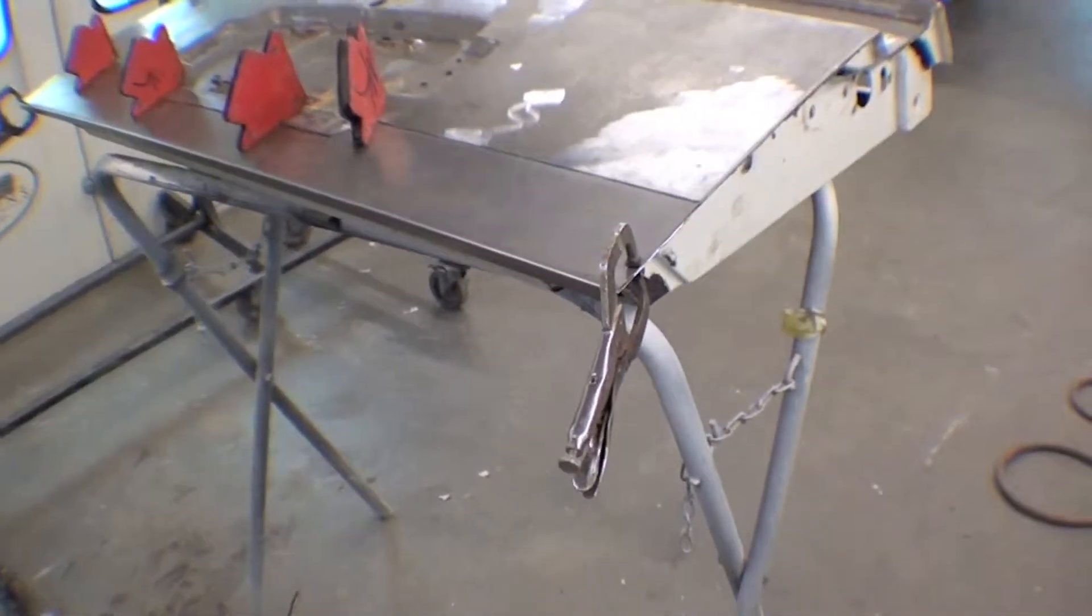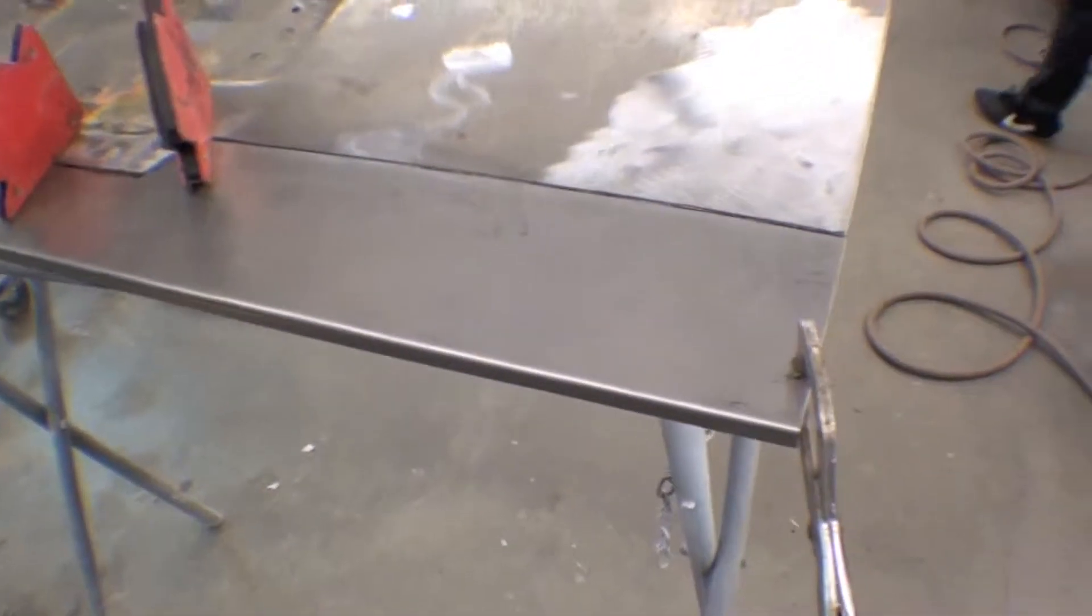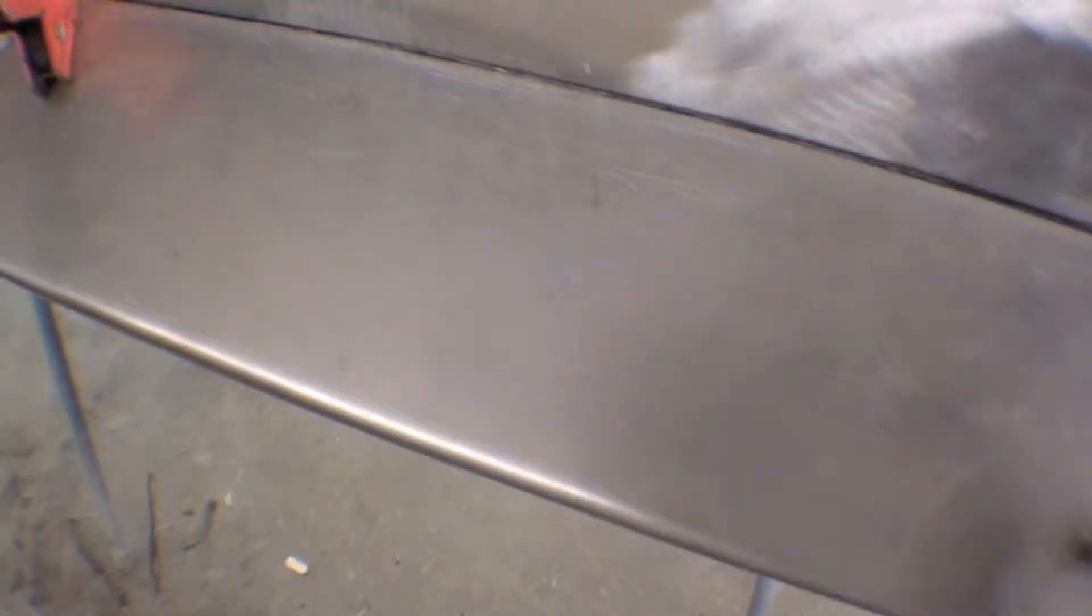Here we are on FJ55 with our patch panel made. As you can see, we're going to butt-weld it in here, but first we've got to actually remove this and sandblast the inner.